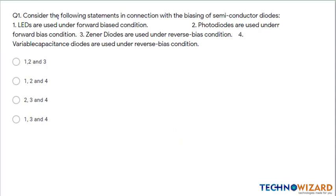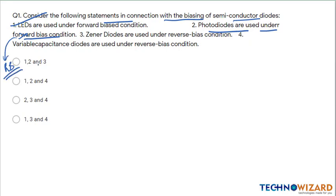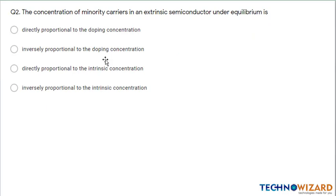Question number one: consider the following statements in connection with the biasing of a semiconductor. First, LEDs are used in the forward bias condition — correct. Second, photo diodes are used under forward bias condition — no, photo diodes are used in reverse bias condition. Third, zener diodes are used under reverse bias — yes, correct. Variable capacitance diodes are also used under reverse bias condition. Therefore one, three and four are correct, therefore option D is the correct answer.